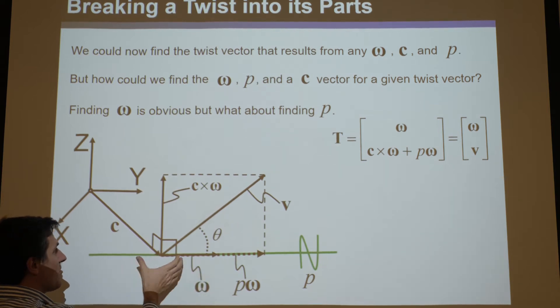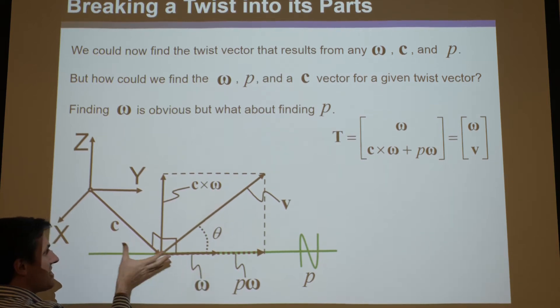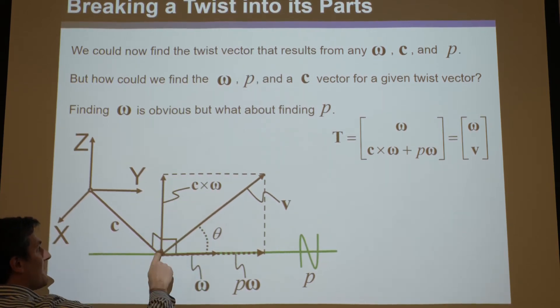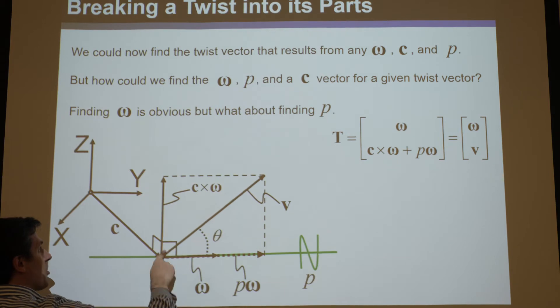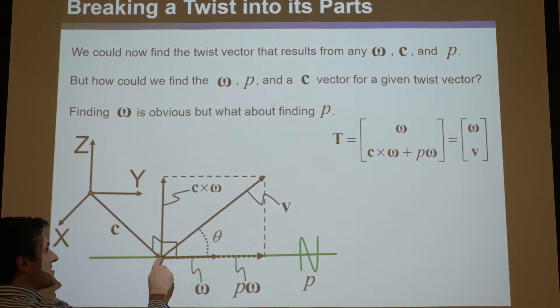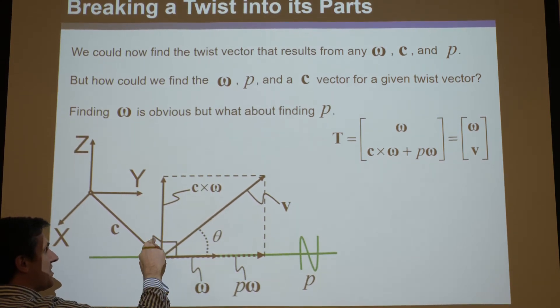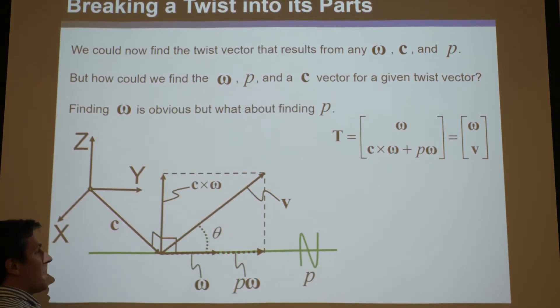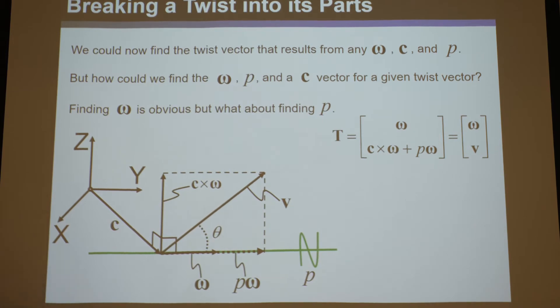Established by c and omega, you take c cross omega and you'll get a vector that points perpendicular to the plane established by those guys. You can see it's perpendicular to those guys — that's c cross omega.